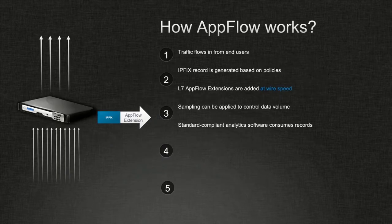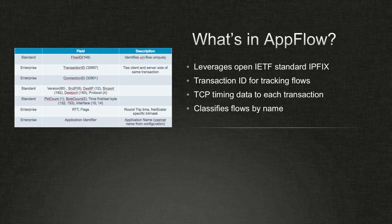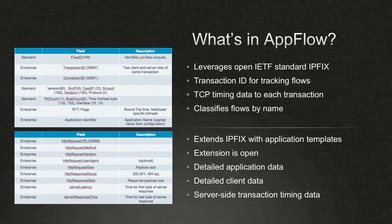What AppFlow actually does is pretty straightforward. Basically, we are a high-speed L7 proxy. We can grab all the information in real time that we use for load balancing and pump it out using IPFix as NetFlow traffic that you can use with any NetFlow tool. The content of AppFlow includes not just L2 and L3 information in IPFix, but also L4 transaction record information from the same infrastructure already used for load balancing.